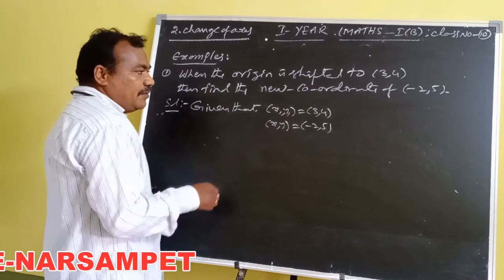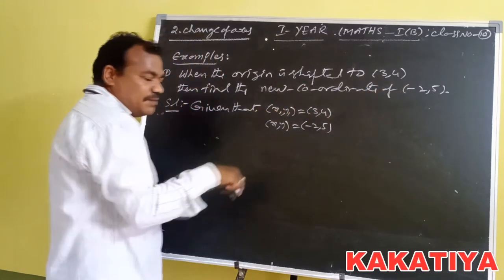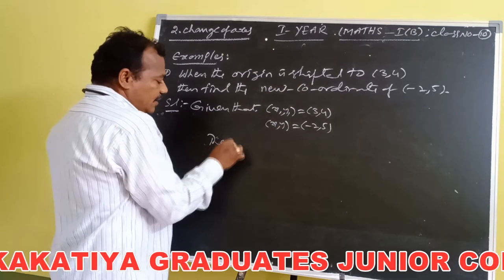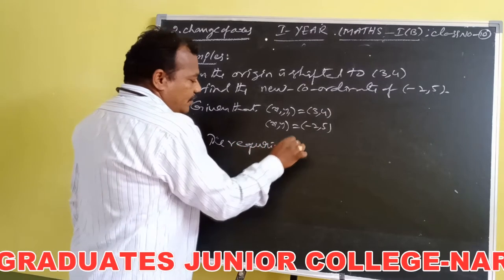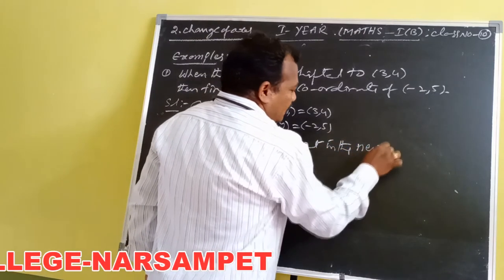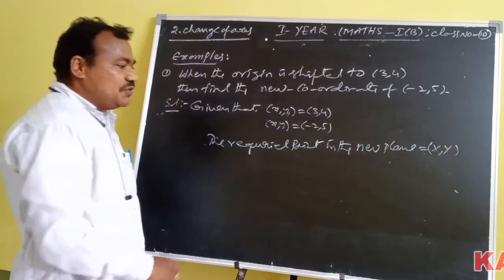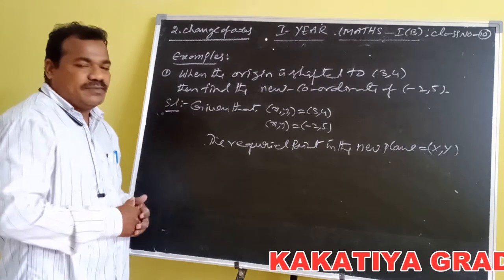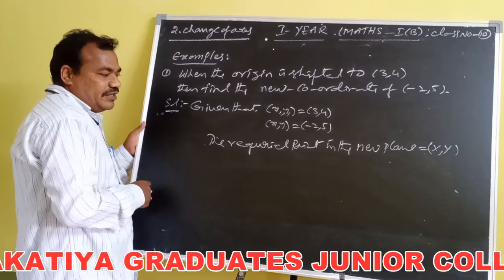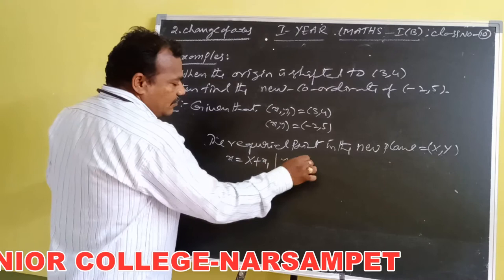Our required coordinate point is in the new system, which we denote as capital X comma capital Y. The given point is in the old plane, so the given coordinate is small x comma small y. By translation of axes, we know the relation: small x is equal to capital X plus x₁, and small y is equal to capital Y plus y₁.